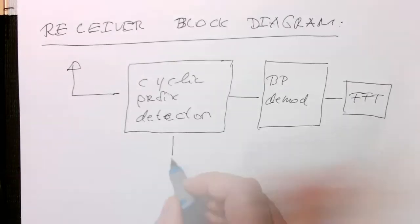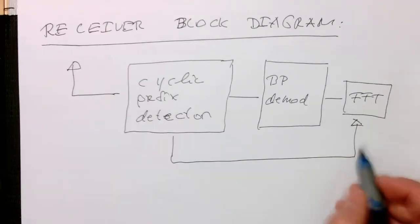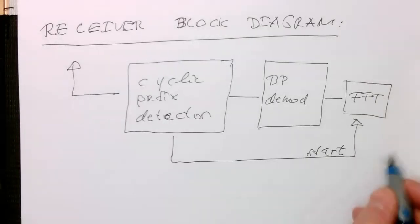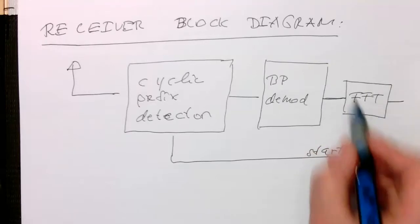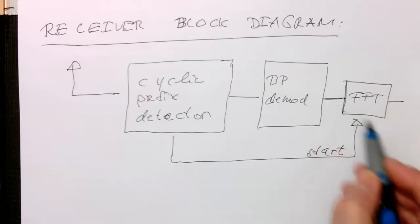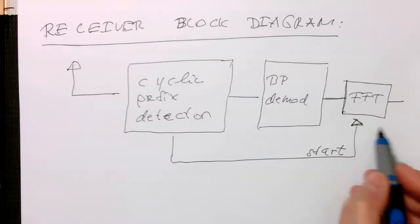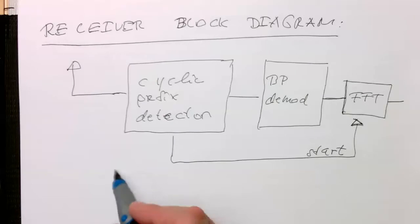Where to start. The Fourier transform gets the start symbol. That's this Fourier transform, now it's the sample where it's starting. So we need to have a look here. How does it actually work as a cyclic prefix detector?